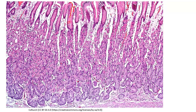The surface epithelial cells are essentially goblet cells — columnar mucus-secreting cells that will be making the mucus layer to protect everything up here at the surface. As we move downward into the gastric glands, we see mucus neck cells: small, very dark-staining, very basophilic cells. These will be producing more mucus and protecting the more delicate tissues further down in the gastric glands.